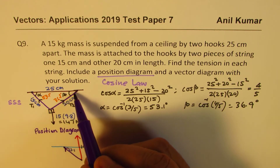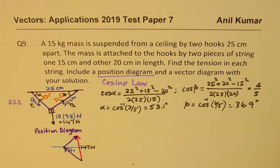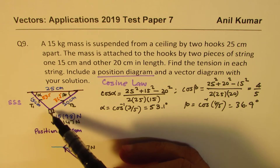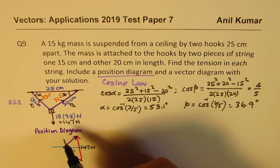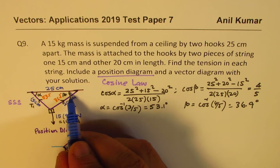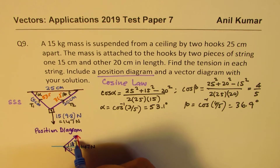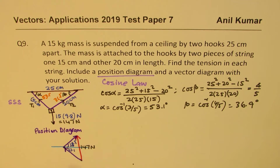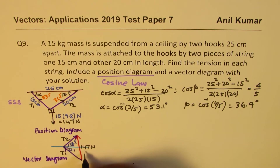From that point we draw a vector parallel to the second string, and you'll see it matches up with the resultant — that is the equilibrant, the force which acts in the opposite direction to the net force, keeping the system in equilibrium. The angle here is 36.9°. That is how you get your vector diagram. Let me label this: tension T1, tension T2, and the weight vertically downward.